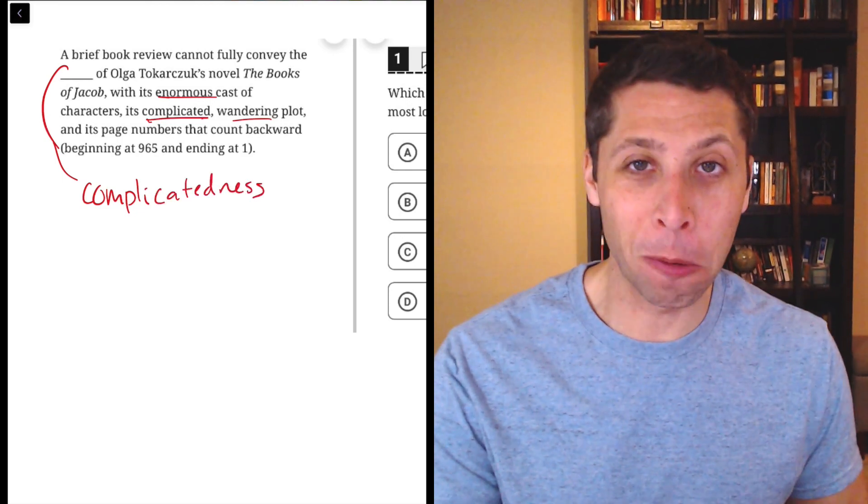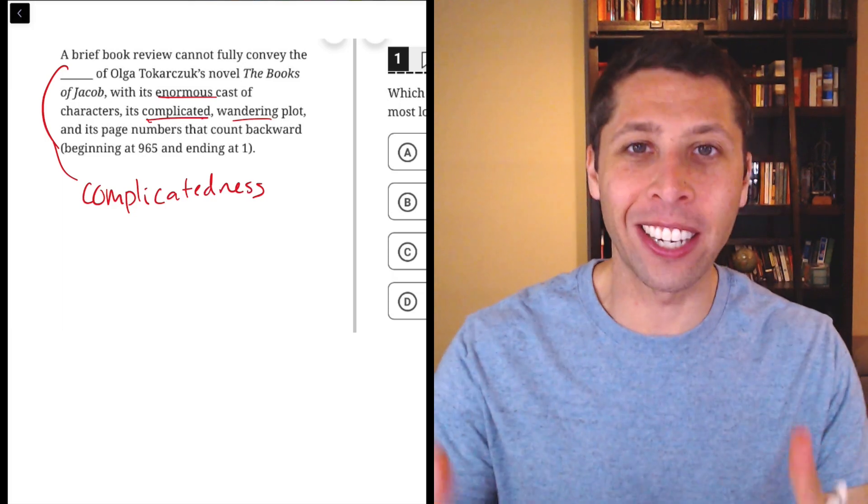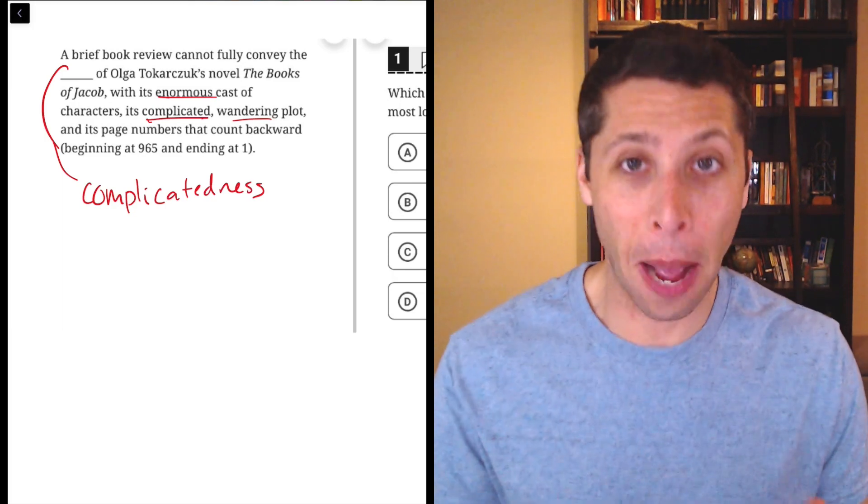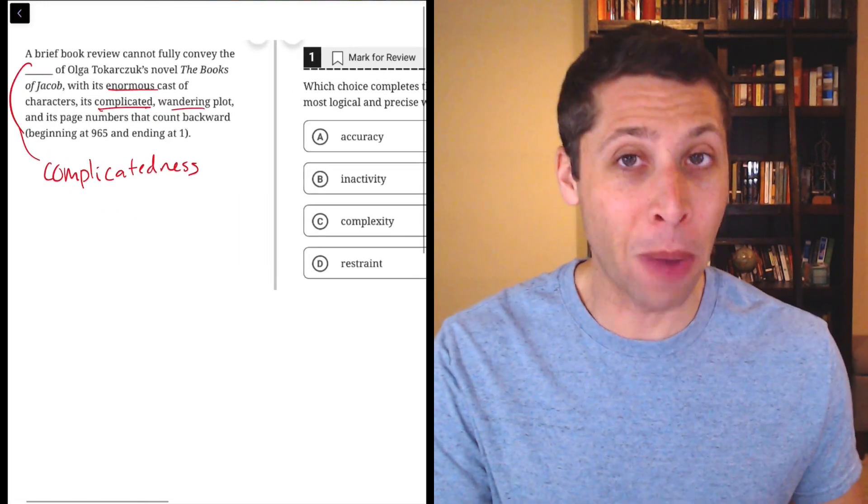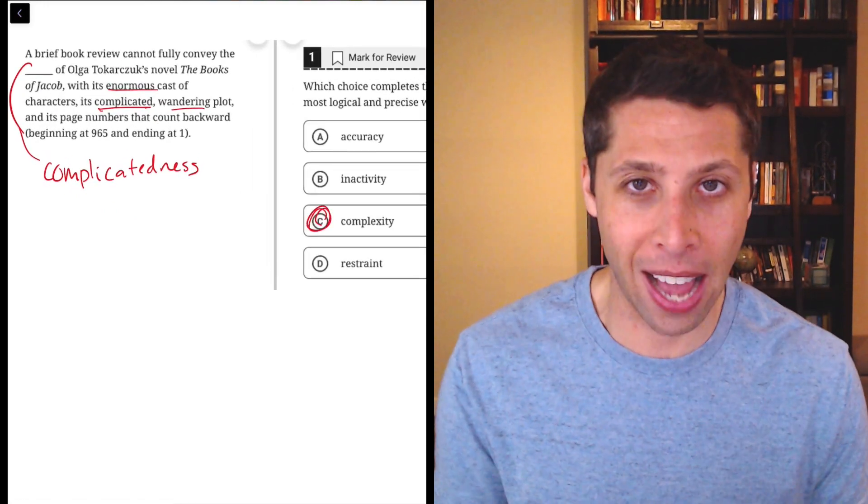Now I know that's not a very good word but that's exactly what they're saying. They're telling us in three different ways that it's a complicated book so we should pick a word that kind of means that and sure enough a much better way to say something is complicated is to say that it is complex,